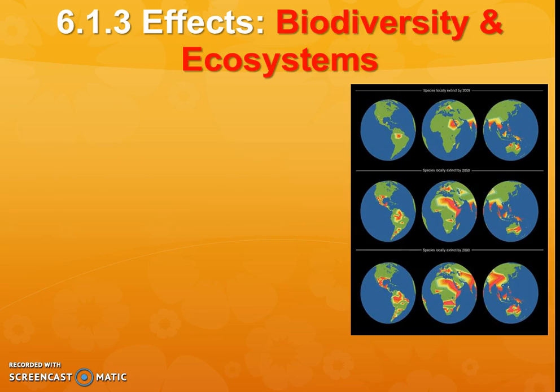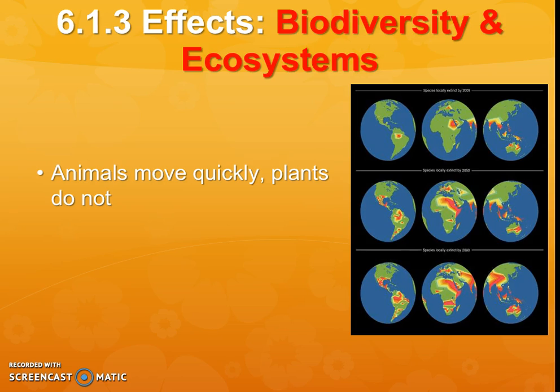Related to all these changes in productivity and food availability, that's not only going to affect us as humans but will affect other animals. Animals that move quickly can migrate, but plants can't move, so a lot of plant diversity will diminish. Overall we would consider that biome shifting, and animals are a little bit better at adapting in a short-term quick situation than plants.